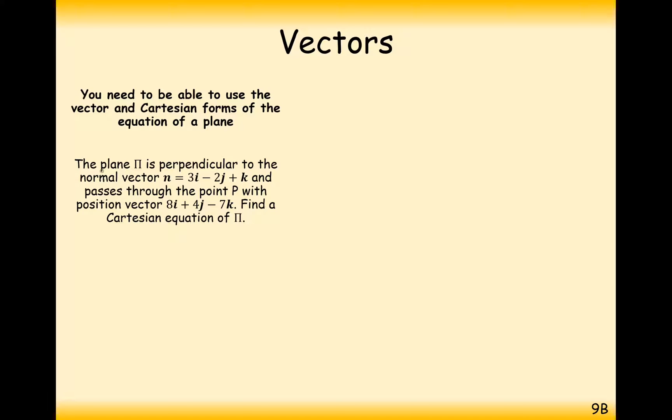Let's have a look at a few questions here. The plane pi, so this Greek letter here is the capital version of pi, it's just capital pi, and it's what we use for a plane. The plane pi is perpendicular to the normal vector 3 minus 2, 1, and passes through the point P with position vector 8, 4, minus 7. Find a Cartesian equation of pi. So, this here is your standard Cartesian equation for a plane.